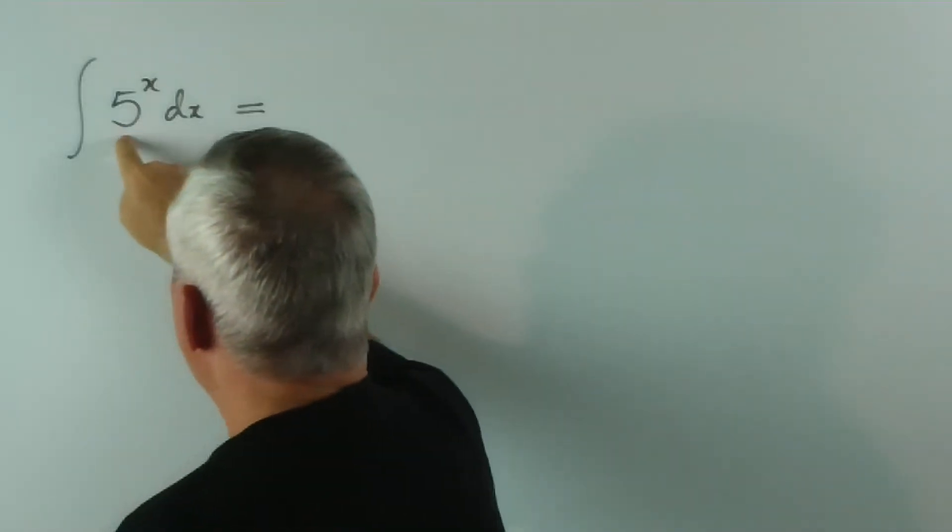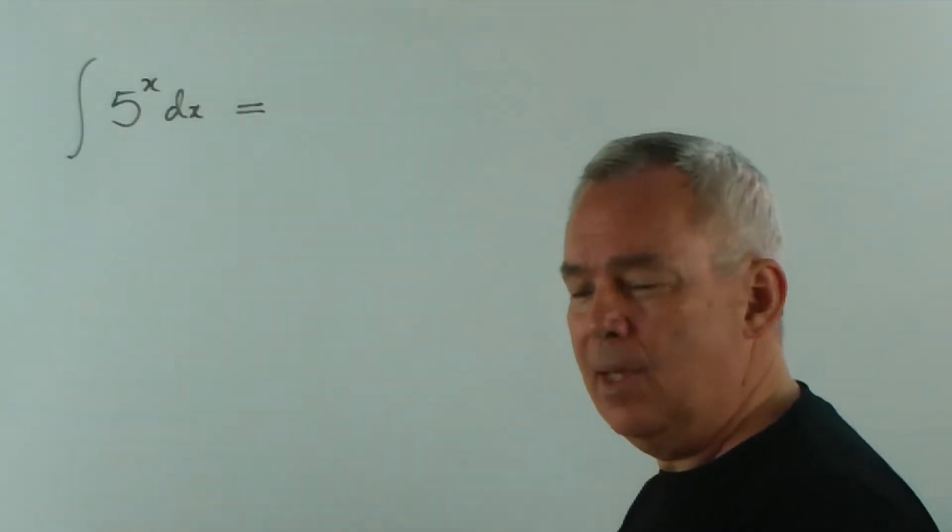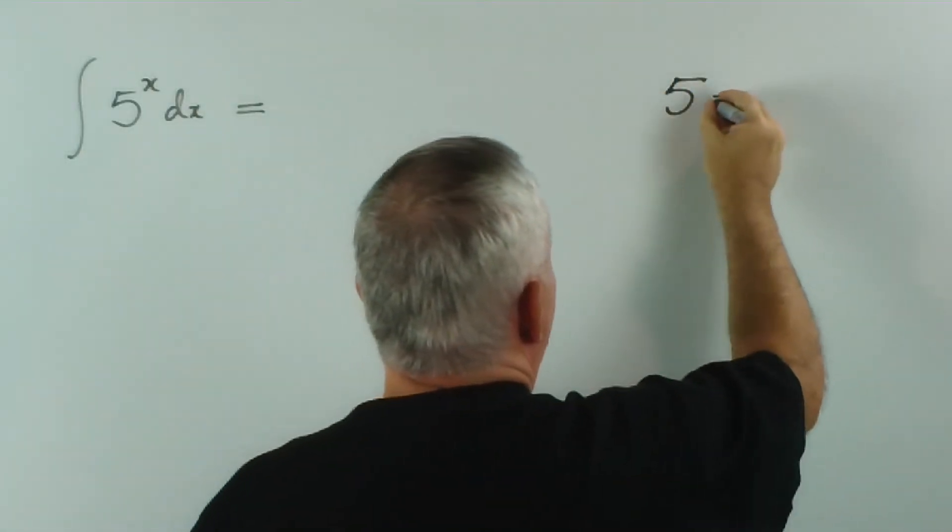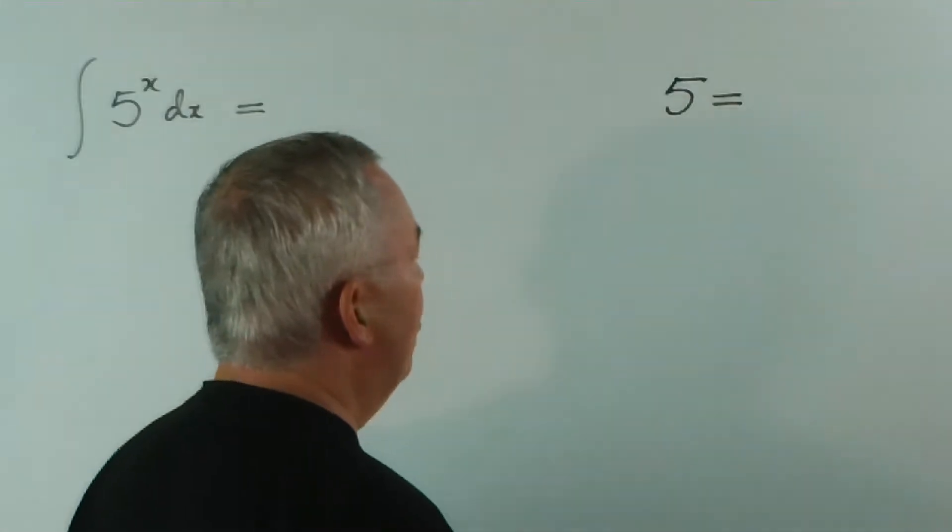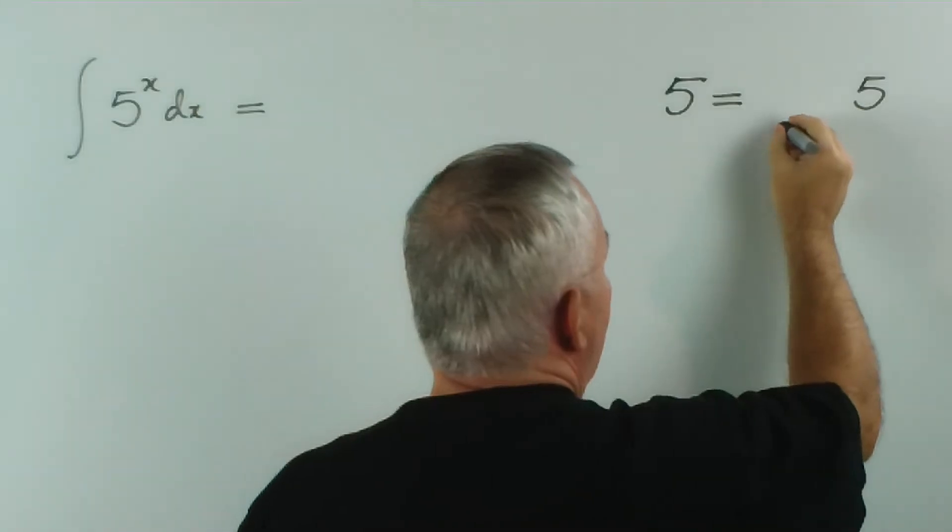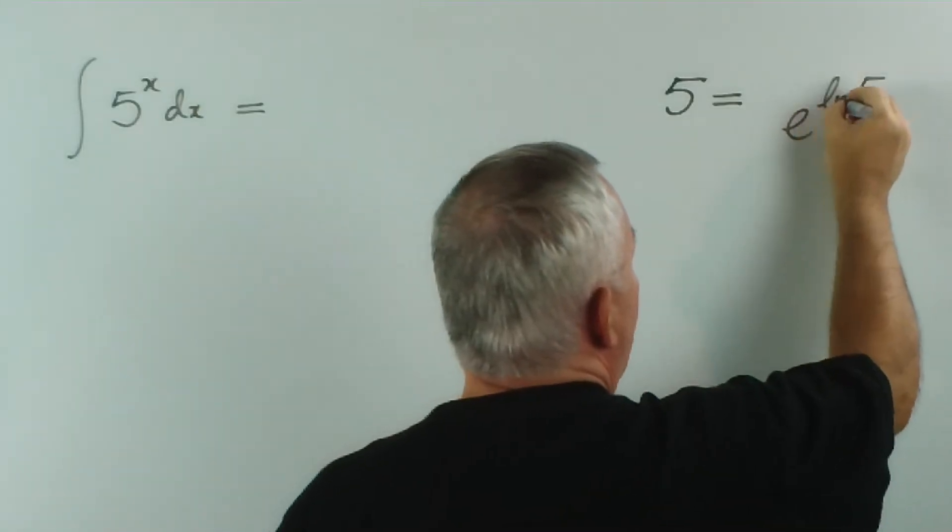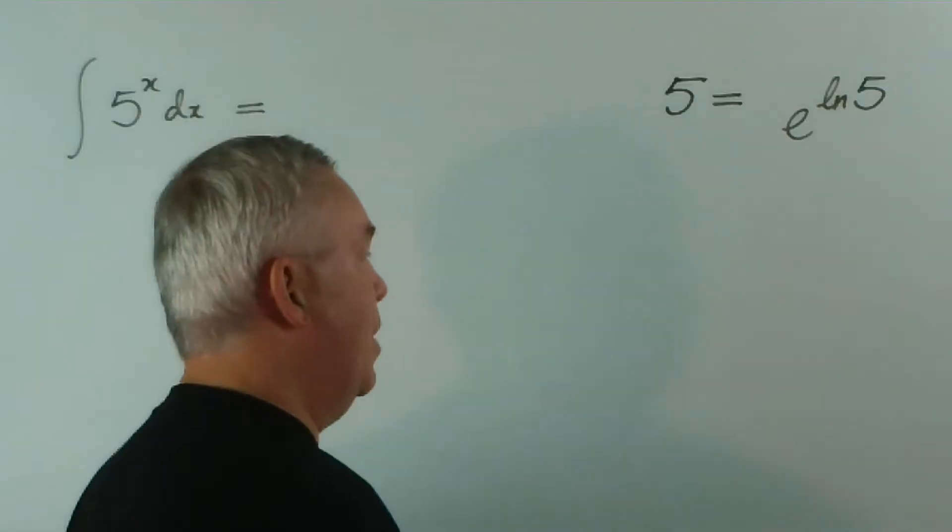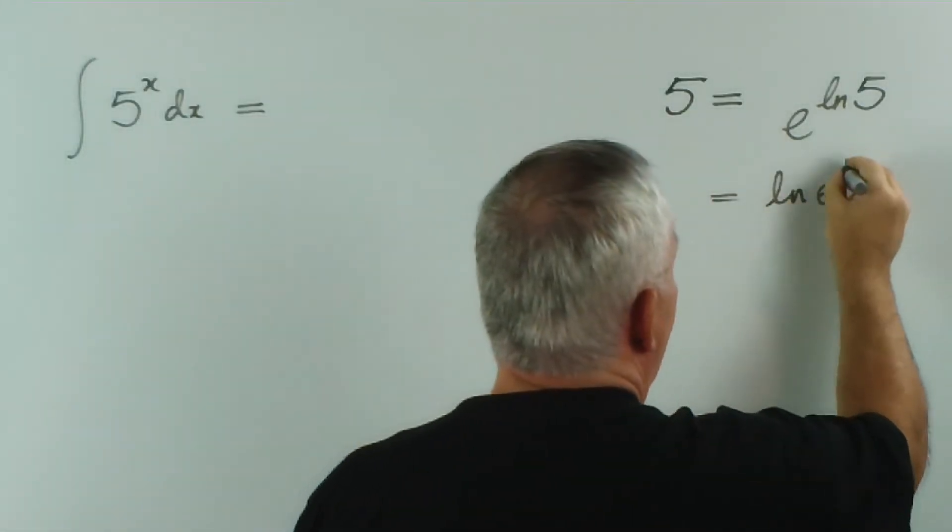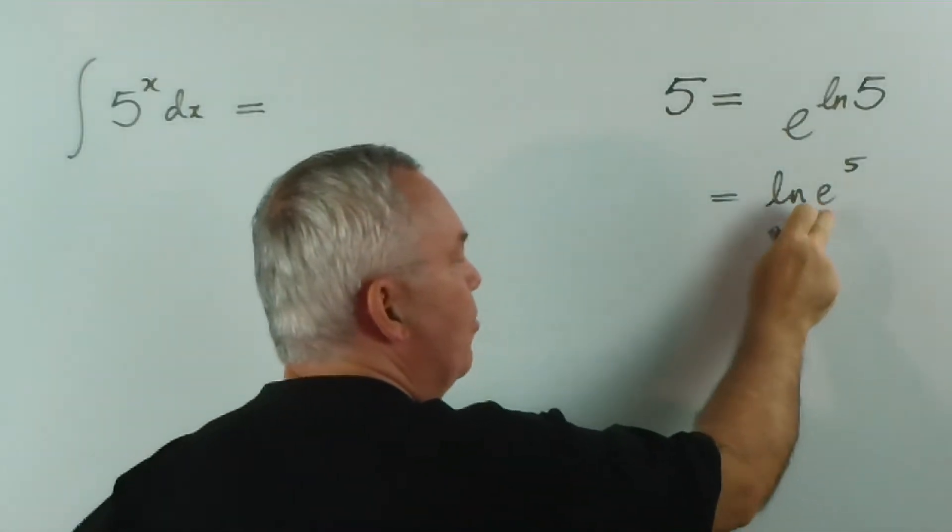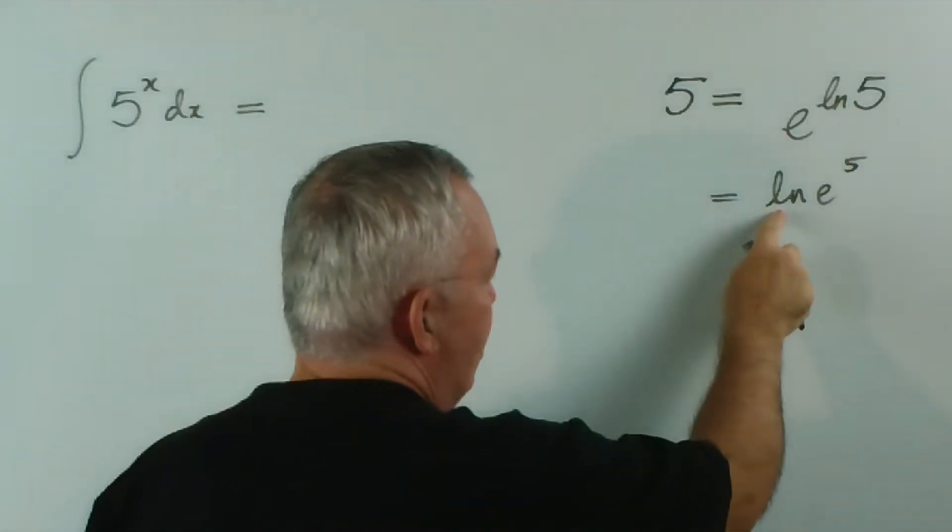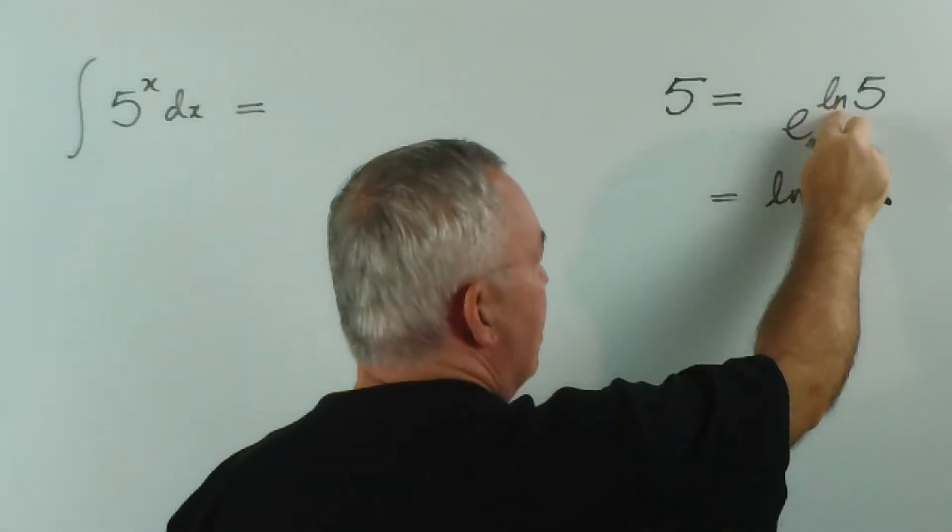To solve it, we need to replace this 5 with an e. And to do that, we need to understand something. 5 is the same as e to the log 5. For that matter, it's the same as log e to the 5, for the simple reason that exponential functions and logarithmic functions are inverse functions. And this undoes that, or this undoes that.